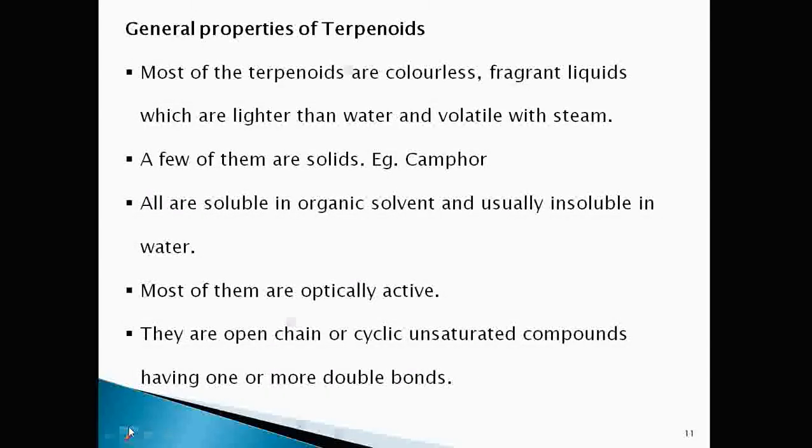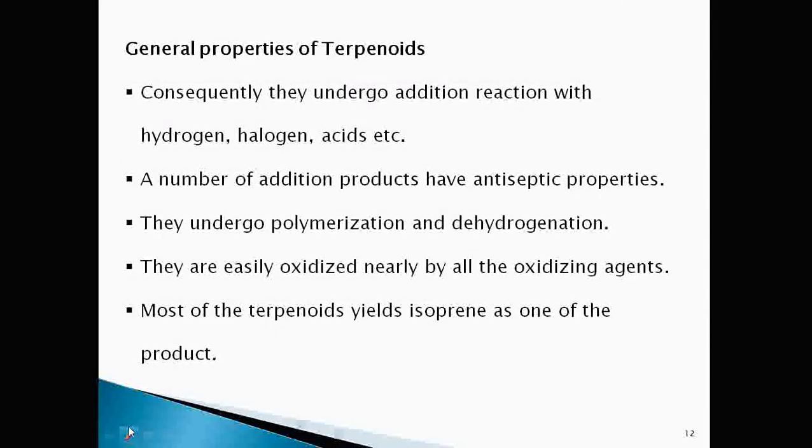Here some general properties of terpenoids are listed. Most of the terpenoids are colorless fragrant liquids which are lighter than water, volatile with steam. Very few of them are solids for example camphor. They are usually insoluble in water but soluble in all organic solvents. Most of them are optically active. They are open chain or cyclic unsaturated compounds having one or more double bonds.